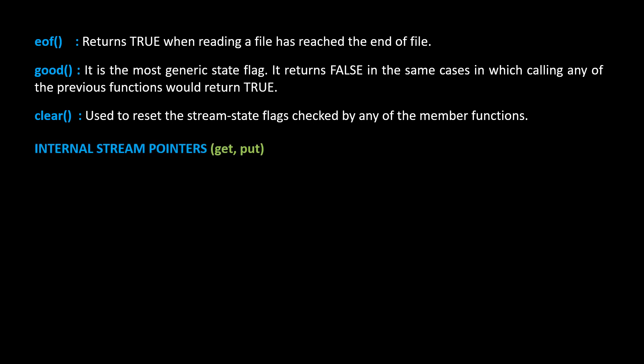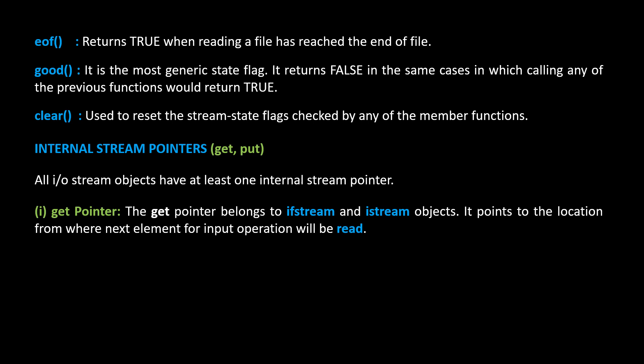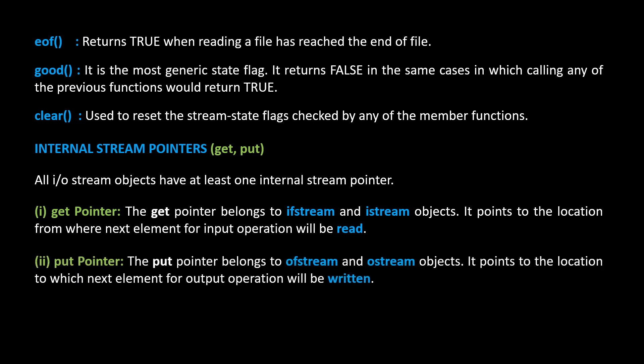Internal stream pointers: get and put. All I/O stream objects have at least one internal stream pointer. The get pointer belongs to ifstream and istream objects. It points to the location from where the next element for an input operation will be read.